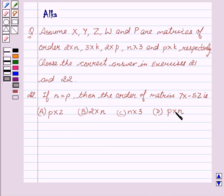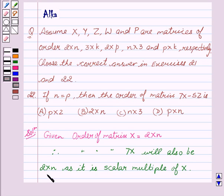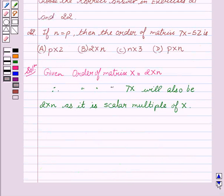Now let's start with the solution. We are given order of matrix X equal to 2 cross n. Therefore, order of matrix 7X will be 2 cross n as it is scalar multiple of X.